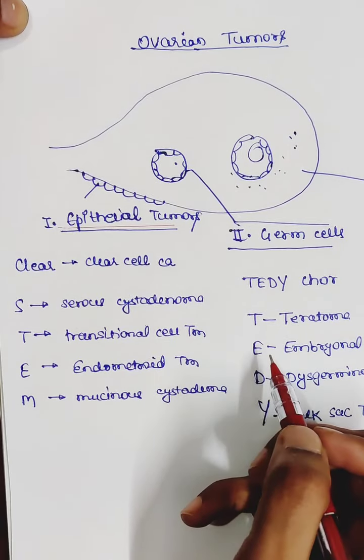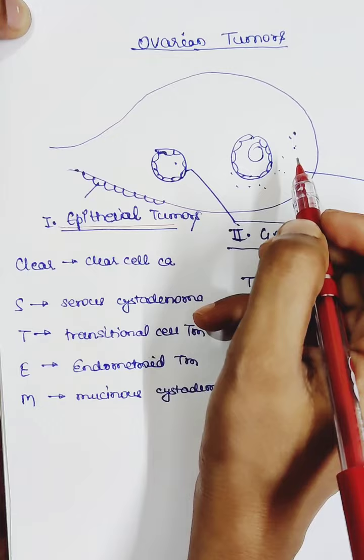This is the chart showing classification of ovarian tumors based on the type of tissue of origin. So the first group is epithelial tumors. They arise from surface epithelium.